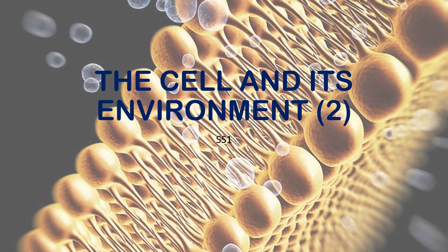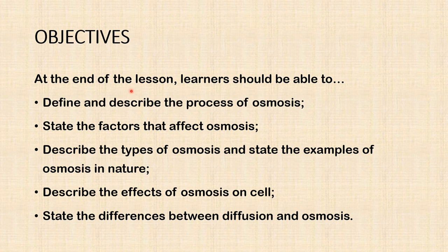Hello, this is another biology lesson and today we'll be looking at the concluding part of the topic: the cell and its environment. This is the second part of the lesson. The objective of this lesson is to help learners define and describe the process of osmosis, state the factors that affect osmosis, describe the types of osmosis, and state the examples of osmosis in nature, and describe the effect of osmosis on cells.